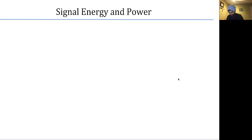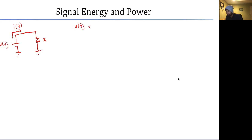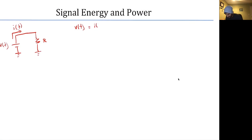Before we talk about the power of a signal, let me review how electrical engineers think about power. We might have a ground connected to some sort of voltage source like a battery — that battery could be a voltage as a function of time. We may have a simple circuit with a wire and a resistor R, and the current modeled with a function I of T.